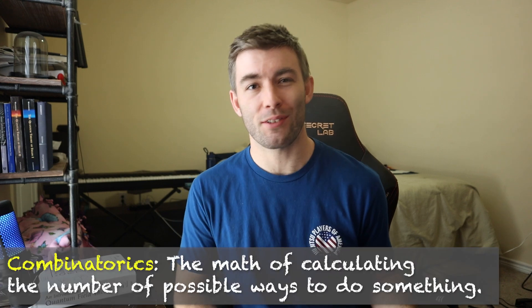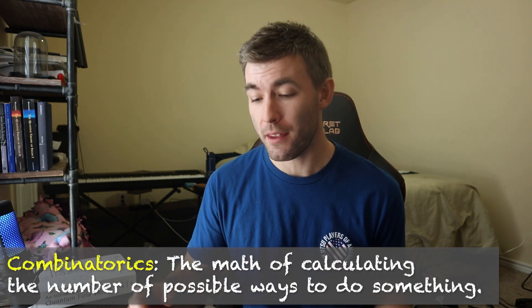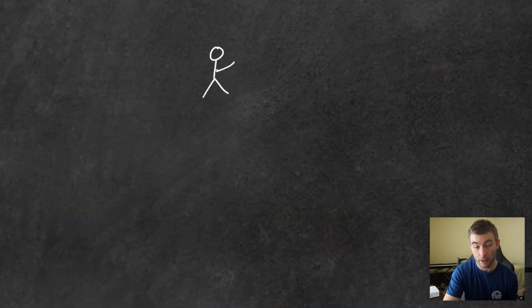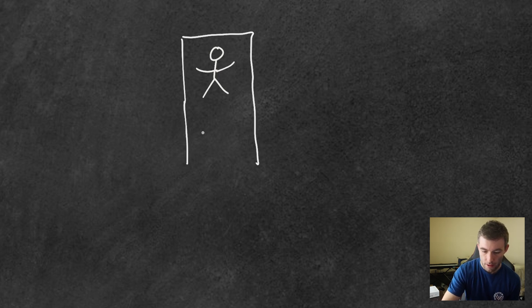If you haven't seen combinatorics yet, it's basically just the math that tells you the number of ways you can do something. As a quick example: imagine me standing at the edge of a narrow cliff, and here's my car. If I make it back to my car I make it home safe — that's the rule of the game.